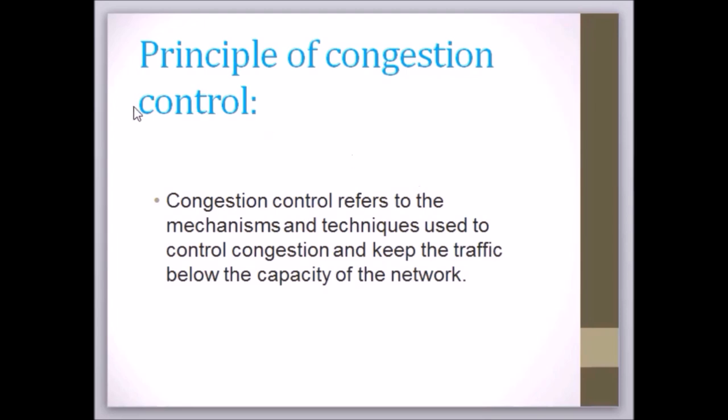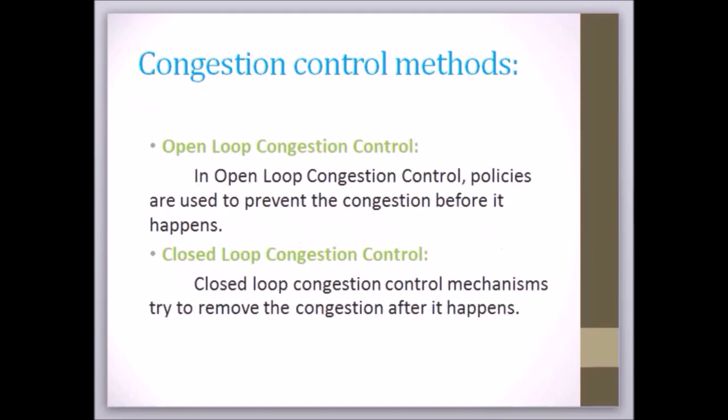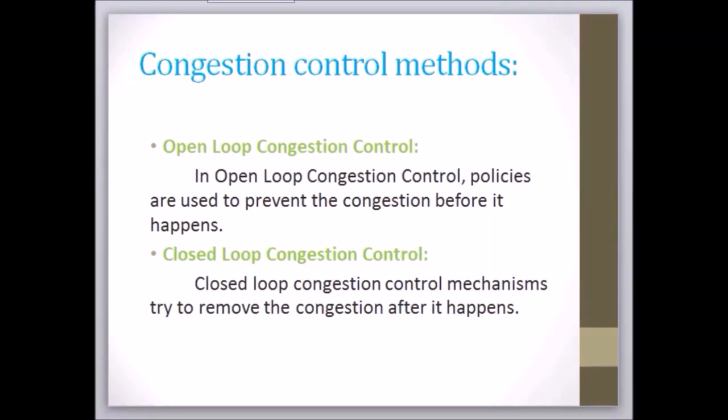Congestion control techniques basically categorize into two types: open loop congestion control and closed loop congestion control. In open loop congestion control, policies are used to prevent the congestion before it happens. Open loop congestion control is further divided into control based on the source and control based on the destination.